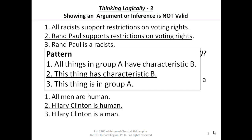Now let's look at the second premise. This premise — Rand Paul supports restrictions on voting rights — says that a certain person has some characteristic. The second premise of our second argument says Hillary Clinton has a certain characteristic, a characteristic of being human. So we identify a thing and we're saying this thing has characteristic B.